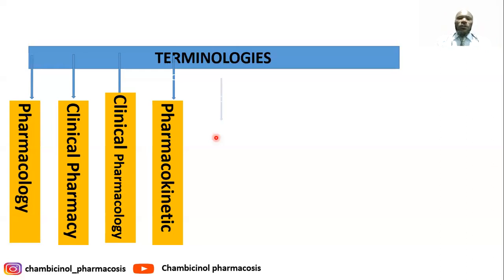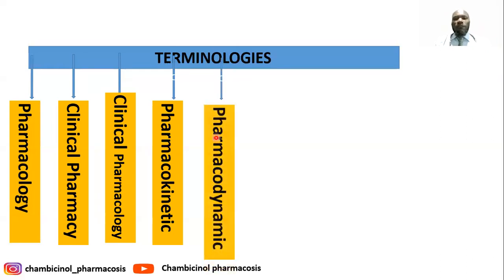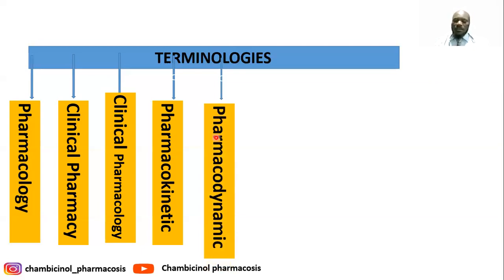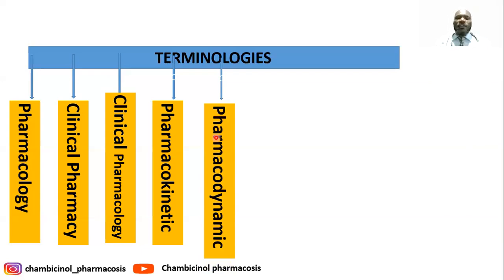We also have pharmacodynamics. Pharmacodynamics is the branch of pharmacology which deals with the effect and mode of action of drugs, or the effect of the drug on the body — what the drug does to the body.